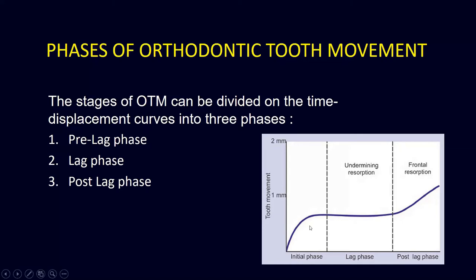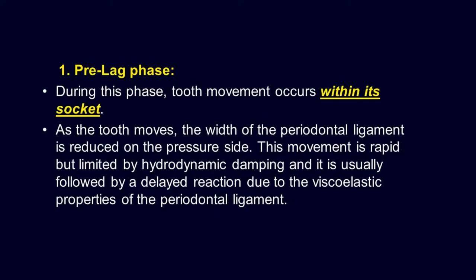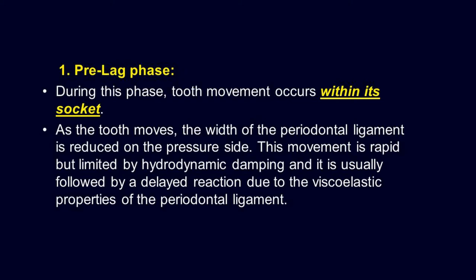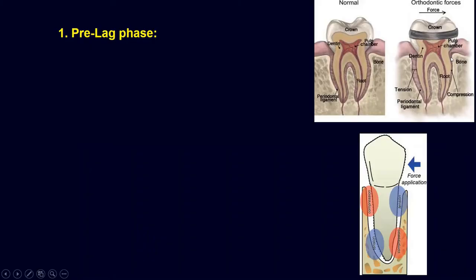In the lag phase, there is no tooth movement — the graph is flat. In the post-lag phase, tooth movement starts again. Let's dive into why there is a lag phase and why tooth movement stops. In the pre-lag phase, the root moves within the periodontal ligament space. After the application of the force, there is an area of compression and an area of tension.